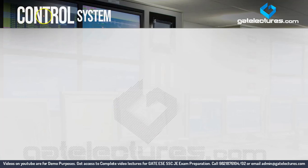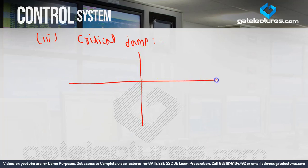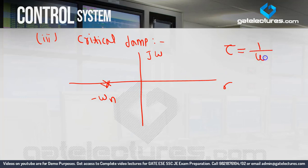Next, for the critically damped second order system — here zeta equals one. The poles are both real and at the same location: minus omega_n and minus omega_n. To calculate the time constant: eliminate the negative sign giving omega_n, then take the reciprocal. So tau = 1/omega_n for the critically damped system.